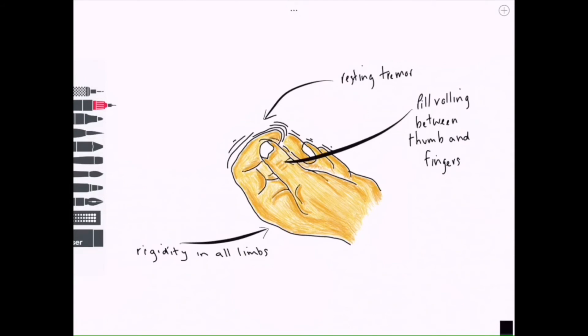The tremor and the lead pipe rigidity together are cogwheel rigidity. So we've got two types of rigidity here. We have lead pipe rigidity which is like the dead weight of the limbs and the complete sustained resistance to passive movement.